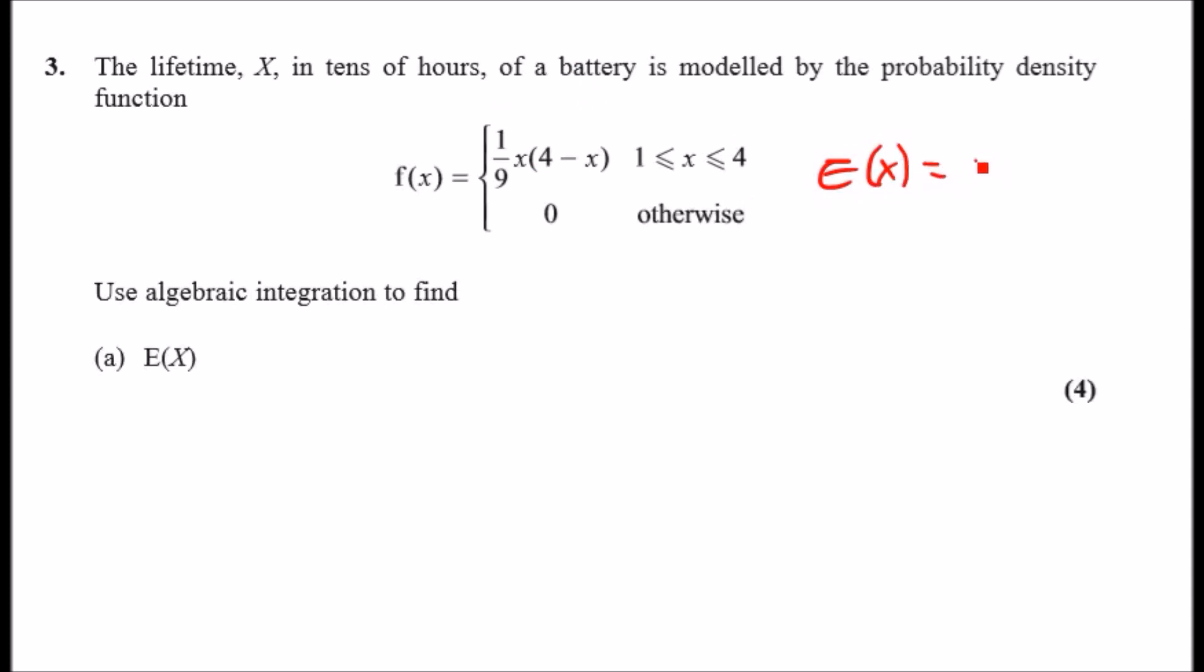That's all it is, so we just have to multiply x to the density function. This equals the integral—let's simplify this. Take the 1/9 out for a second, so it'll be the integral from 1 to 4 of all of this times x. If you multiply this out, it'll be 4x minus x², and then if you times x in front, you get 4x² minus x³ dx.